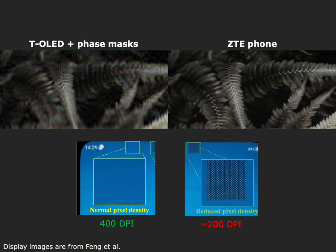Finally, we compare with the ZTE display, which is designed to accommodate under-display cameras. To allow better light throughput, they significantly reduce the display pixel density, and the low density produces apparent visual artifacts on the display.